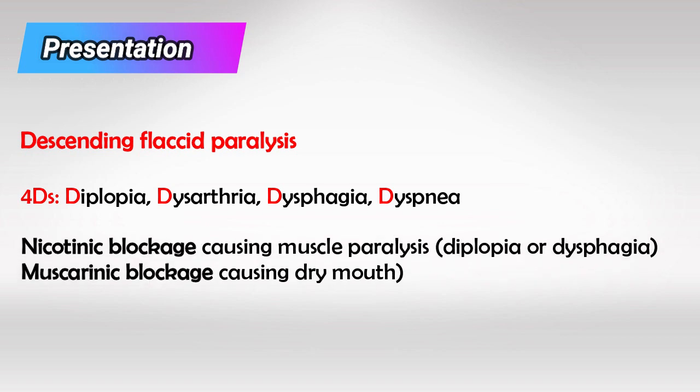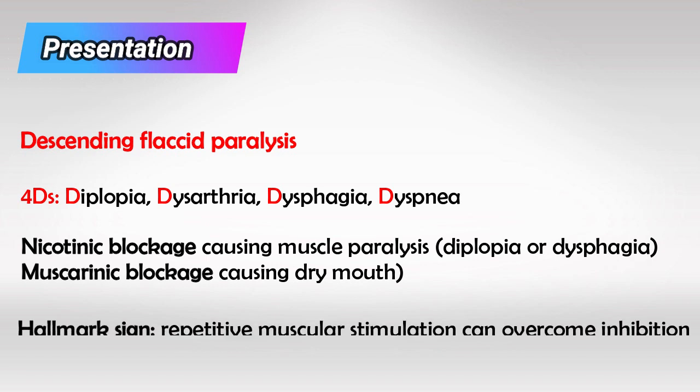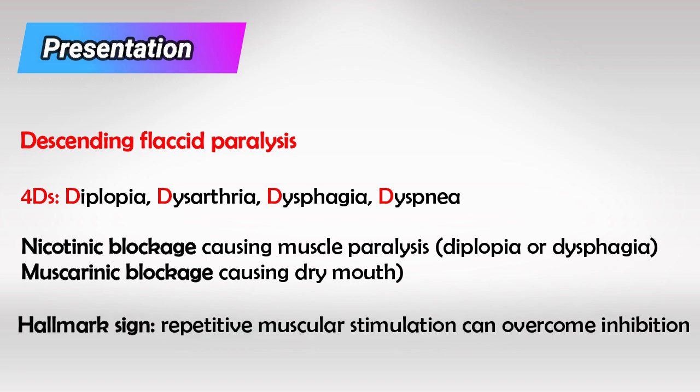However, the highly characteristic feature of botulism is the blockage of both nicotinic and muscarinic receptors. Pathophysiology-wise, if you repeatedly stimulate a muscle that is inhibited by botulism, you will overcome the inhibition — and this could be a target of exam questions.